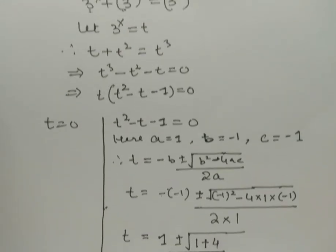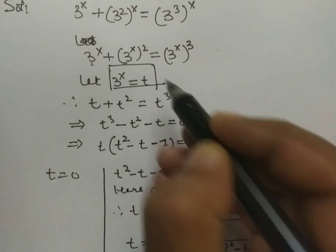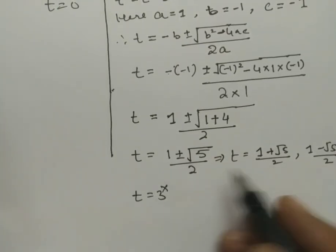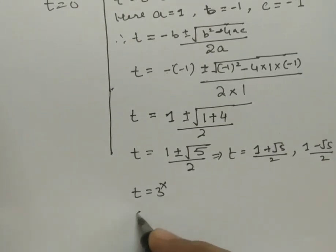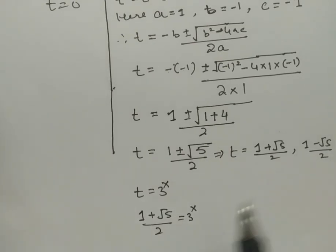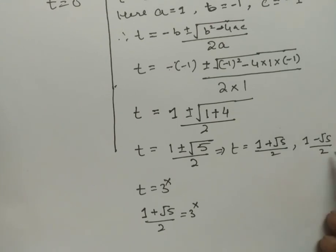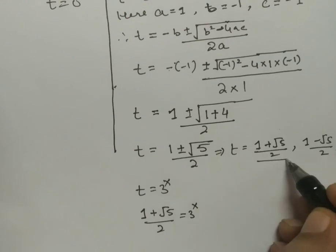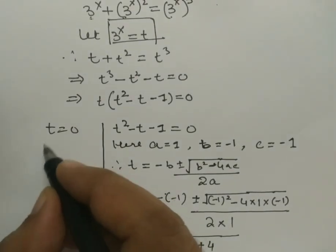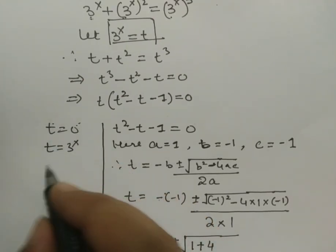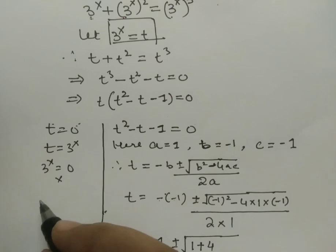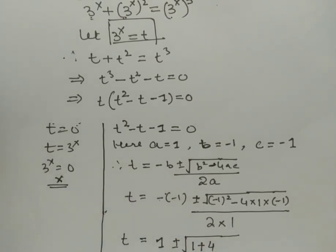Now recall that t = 3^x. We only take t = (1 + √5) / 2, because the negative root doesn't exist — since 3^x is always positive, t must be positive. Also, t = 0 is not possible because any exponential 3^x is always greater than 0.